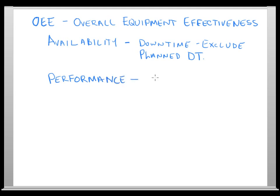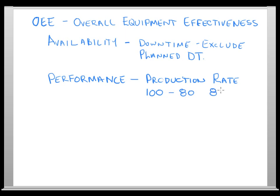The second component is Performance, which looks at your production rate. For example, if the operator turns the machine speed down and they're only running at 80% of what they should be, the machine is capable of 100% but not producing it. If you were supposed to produce 100 cases per hour and only produce 80, your OEE performance is 80%. You can't put as much product in the warehouse because it was slowed down.